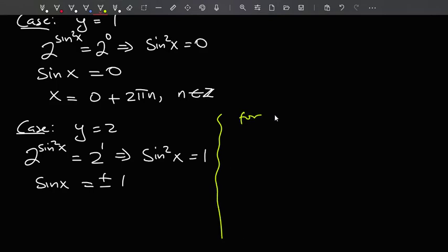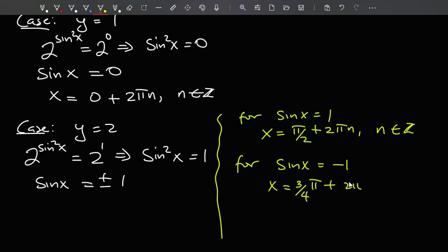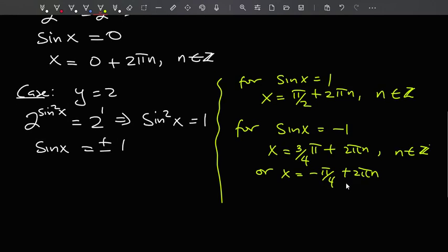So for sine x equals positive 1, pi over 2 is a solution to this. But again, sine is periodic. So it could say plus 2 pi n, of course, n is an integer. Positive and negative both apply here. Then for sine x equals negative 1, you'll have x equals 3 over 4 pi plus 2 pi n, where n is an integer. Or for this, you could actually say also x equals minus pi over 4 plus 2 pi n, still n is an integer.